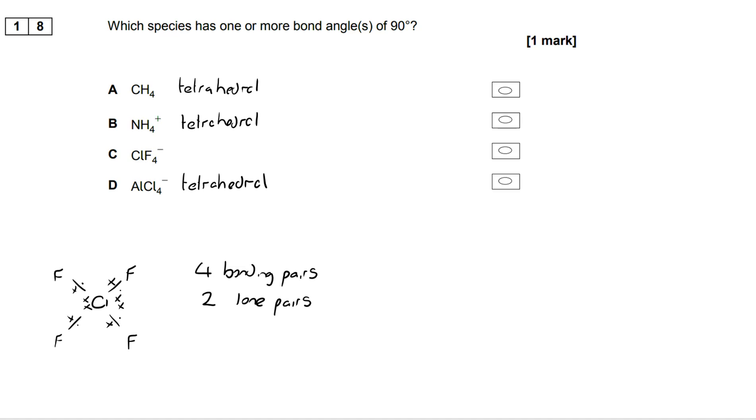Now you might then be thinking octahedral is 90 and lone pairs cause a reduction of around two and a half degrees. But actually there's a particular quirk to this shape.